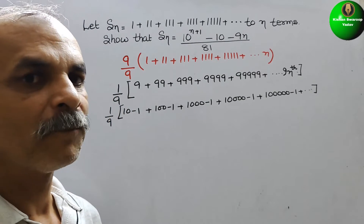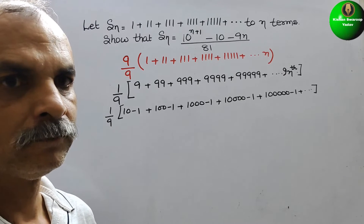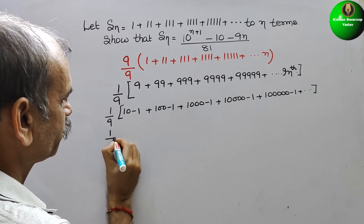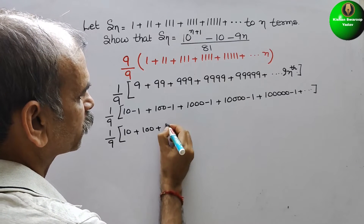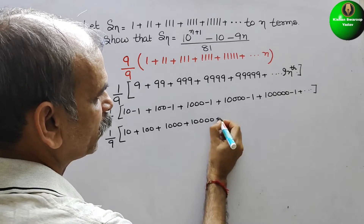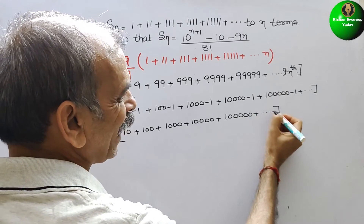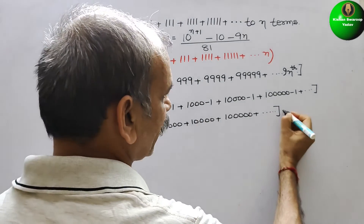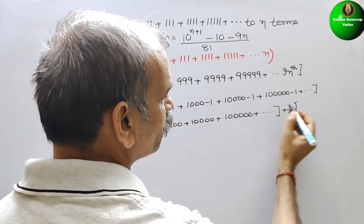The second sequence sums to minus n. So we can write: (1/9) times [10 plus 100 plus 1000 plus 10000 plus ... up to n terms] plus (1/9) times (minus n).